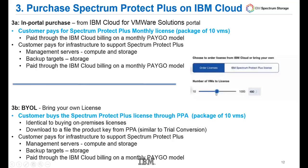After sizing your vSnap and choosing the number of licenses, you can choose an in-portal purchase and pay for Spectrum Protect Plus monthly licenses in packages of 10, billed to you by the IBM Cloud for VMware Solutions. Or you can choose to bring your own license. If you already have Spectrum Protect Plus licenses or storage suite licenses purchased through Passport Advantage, you can export that key to a file — similar to downloading a trial version — and import that file into the IBM Cloud. That will be used to bill your Spectrum Protect Plus licenses, with billing going through your normal Passport Advantage.